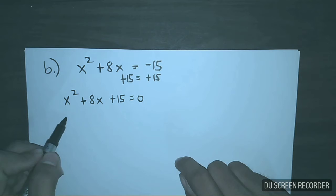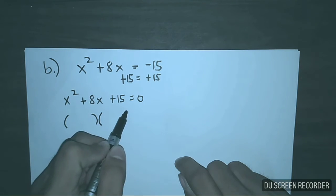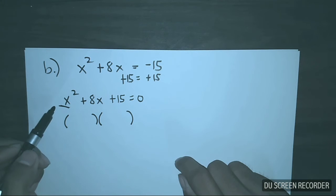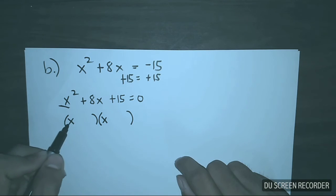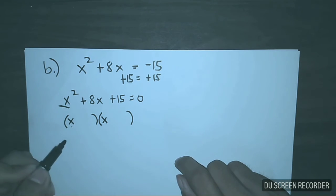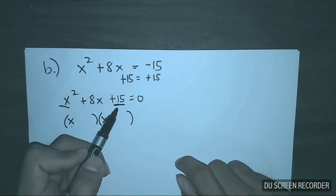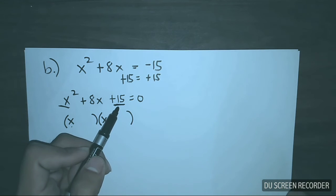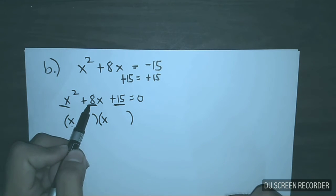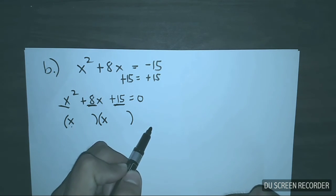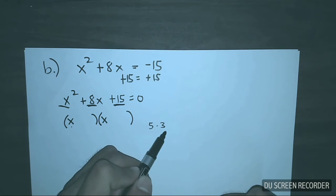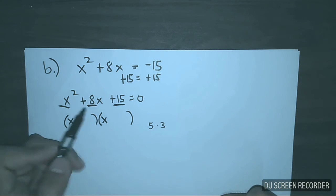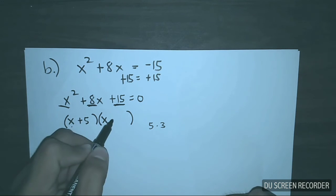The same process: prepare two sets of parentheses. Since the first term is x squared, the first terms of the factors are both x, because x times x gives x squared. The constant is 15 — we need two numbers whose product is 15 and whose sum is 8. Those numbers are 5 and 3: 5 times 3 is 15, and 5 plus 3 is 8. So the factors are (x plus 5)(x plus 3).